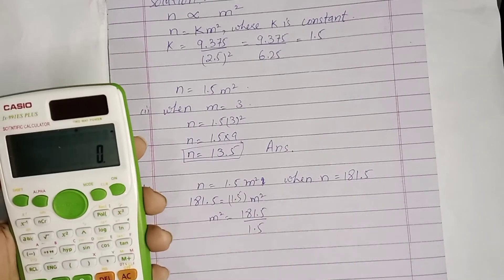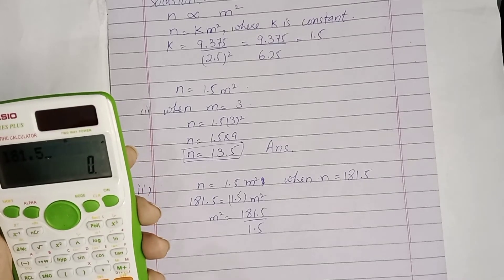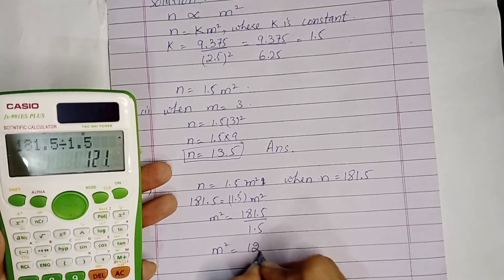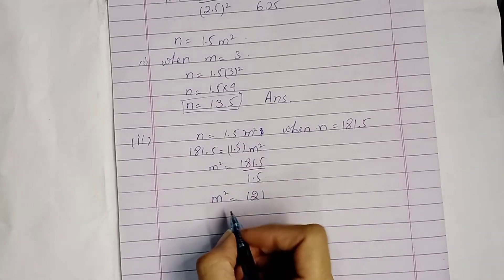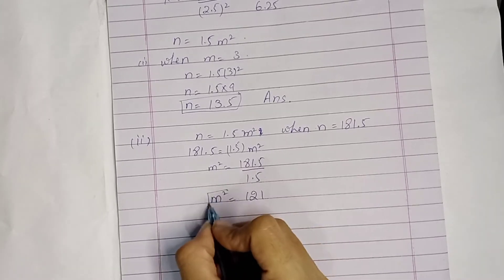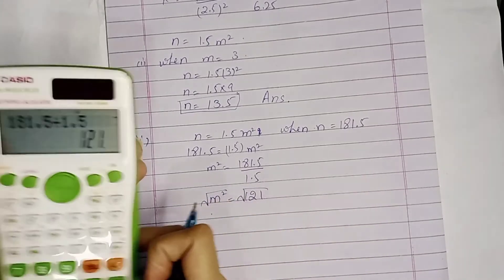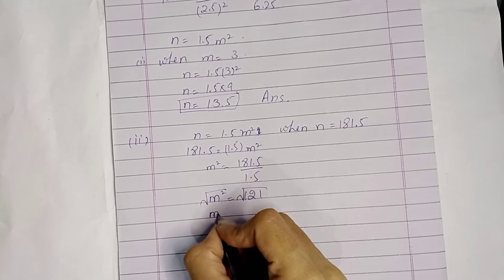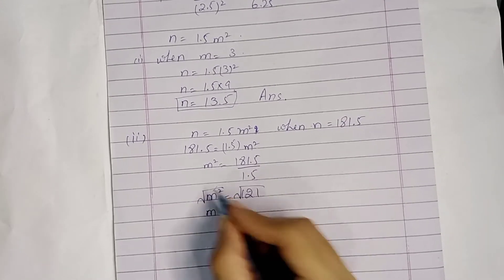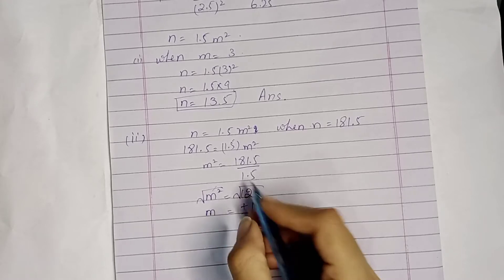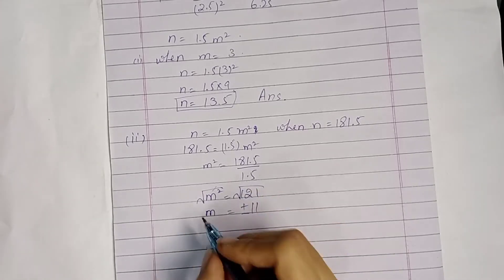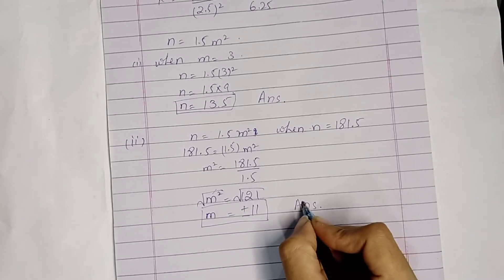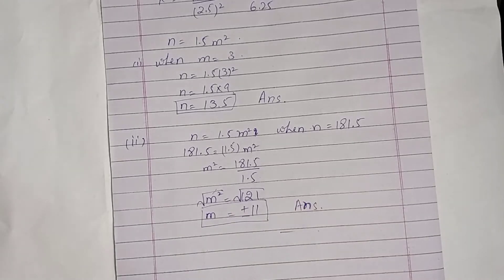You can divide 181.5 by 1.5 to get 121, and then take the square root of both sides. The square root of 121 is plus or minus 11. This is part 2 answer. Question number 4 is done.